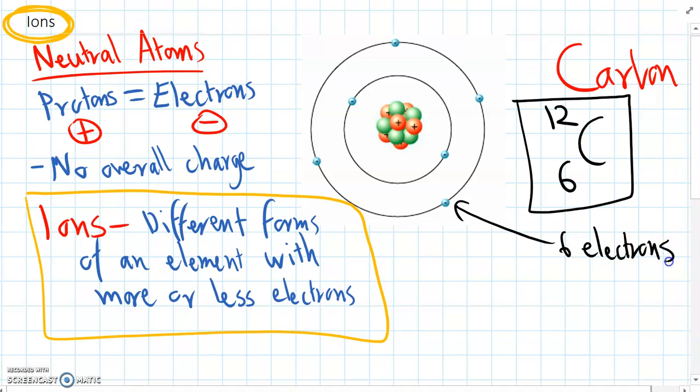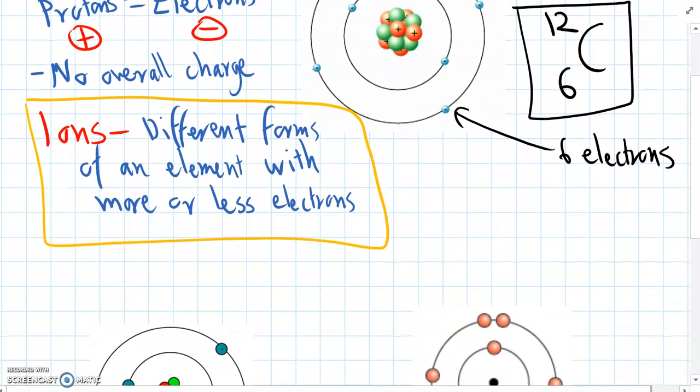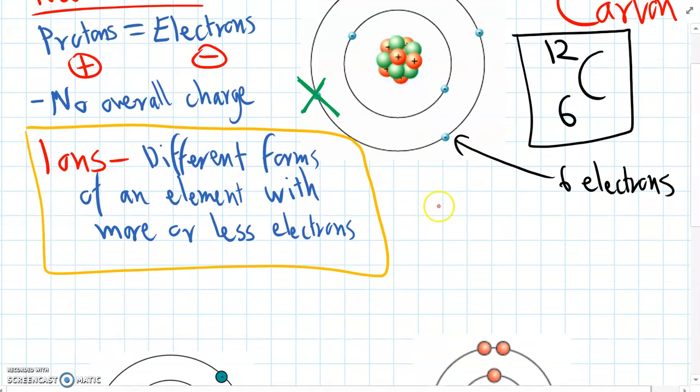So here is carbon when it's neutral. Let's look at a few examples where we can get ions now. So with carbon, if this carbon lost one of its electrons, suddenly we now have, we still have our six protons, but now we only have five electrons.